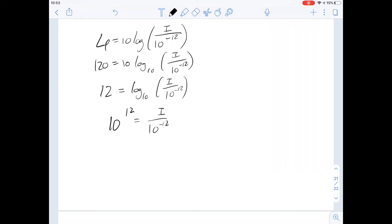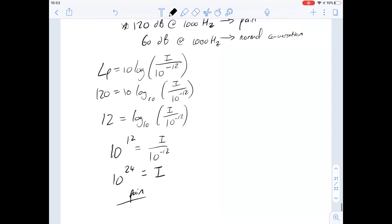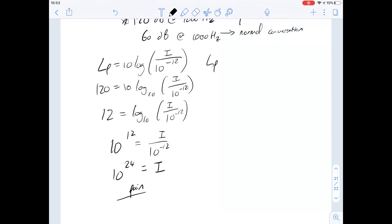With our log rules we know that 10 to the 12 is going to be equal to i over 10 to the minus 12. If we multiply both sides then, or divide both sides by 10 to the minus 12, we get 10 to the 24. And so we end up with an intensity level of 10 to the 24 at the threshold of pain.